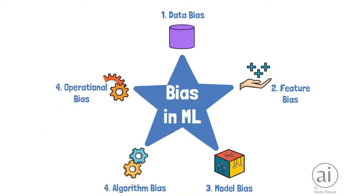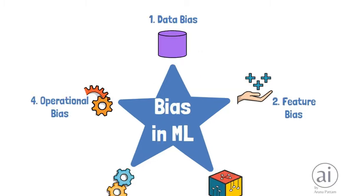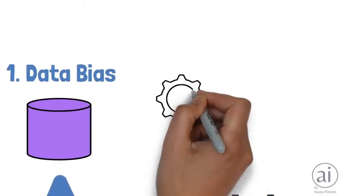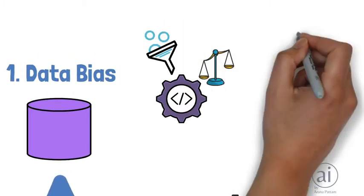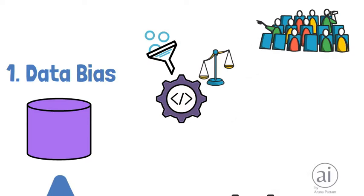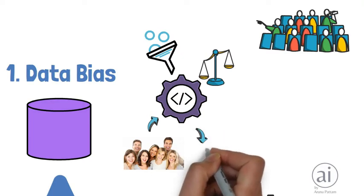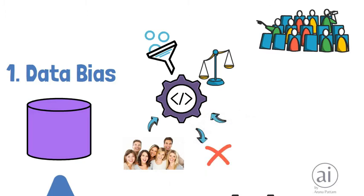Let's now go through each of them in a little detail. Data bias: a system is biased if the data used to train it is biased. For example, imagine a system trained on photos of people. If the training data contains more photos of white people than black people, then it will likely perform poorly at identifying members of a black population.